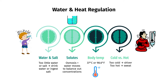We maintain our body temperature at about 37 degrees Celsius or 98.6 Fahrenheit, the optimal temperature for the enzymes in our body. If we get too cold, we'll preserve heat by shivering and constricting our blood vessels, and if we get too hot, we'll breathe more and sweat more.